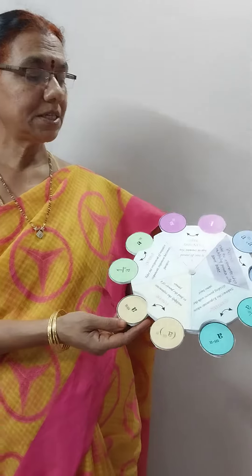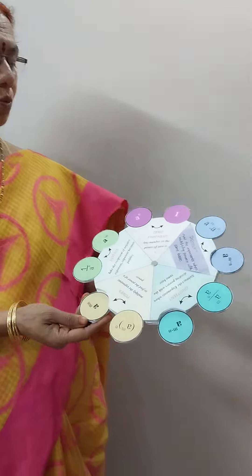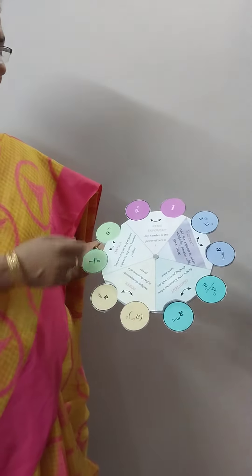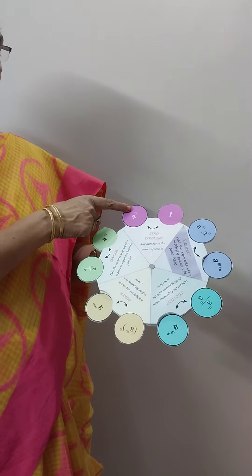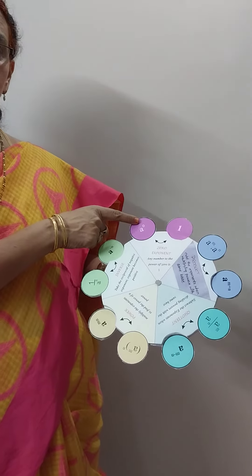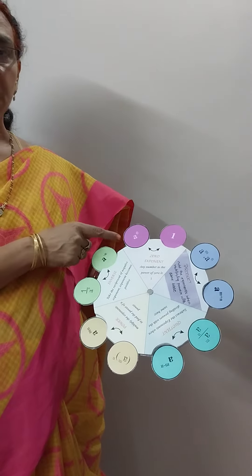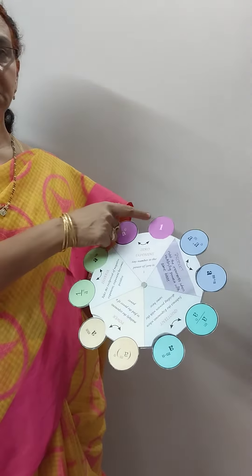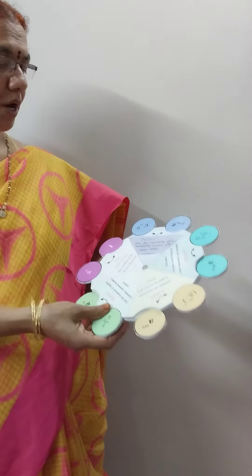This is the laws of exponents model. Any number to the power of 0 is 1. A to the power 0 is equal to 1.